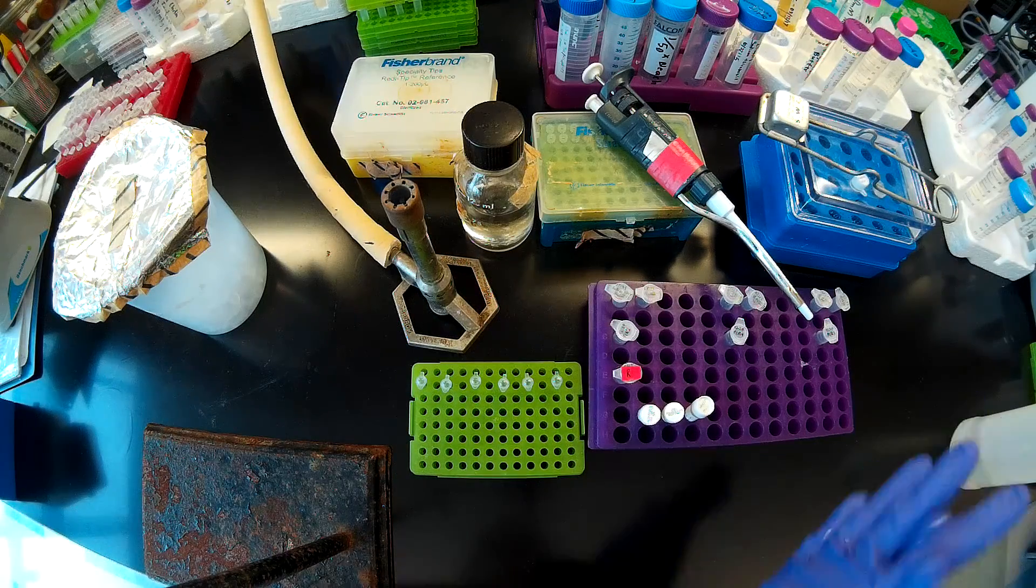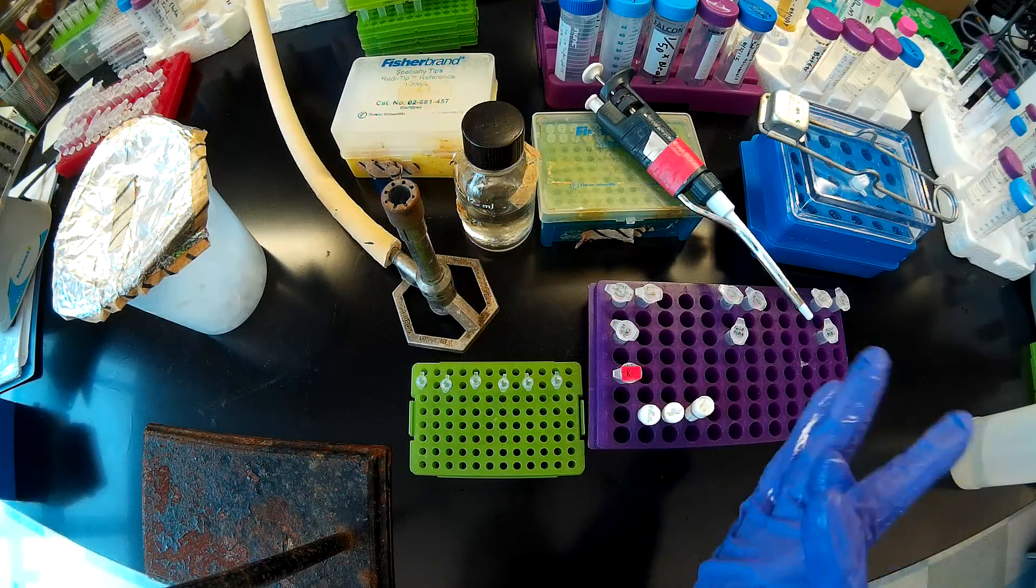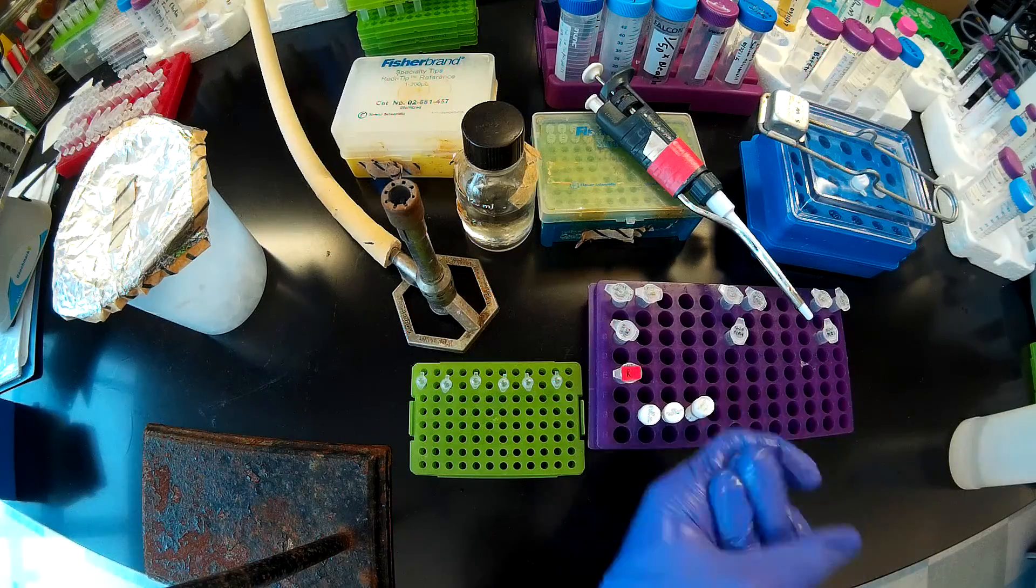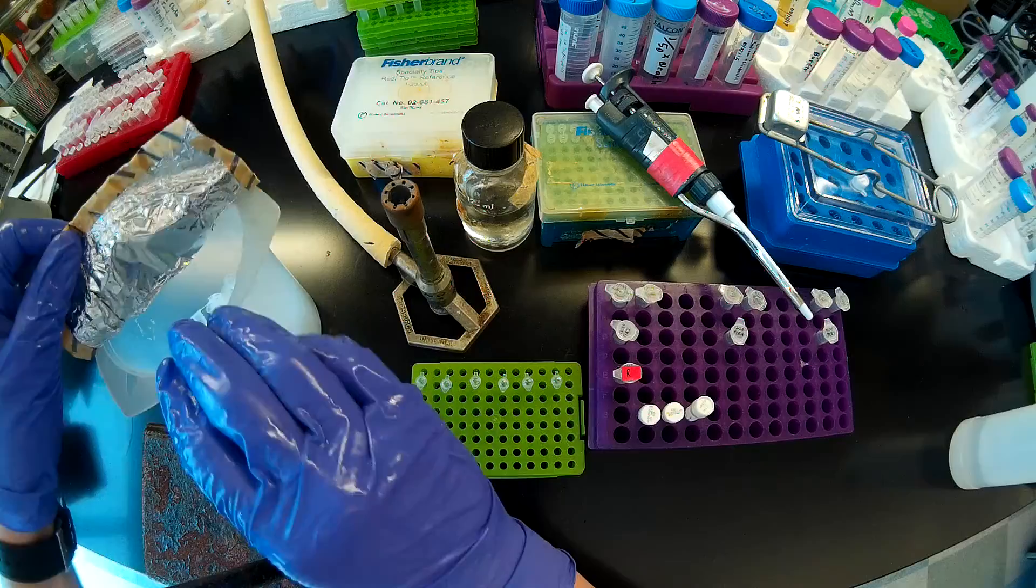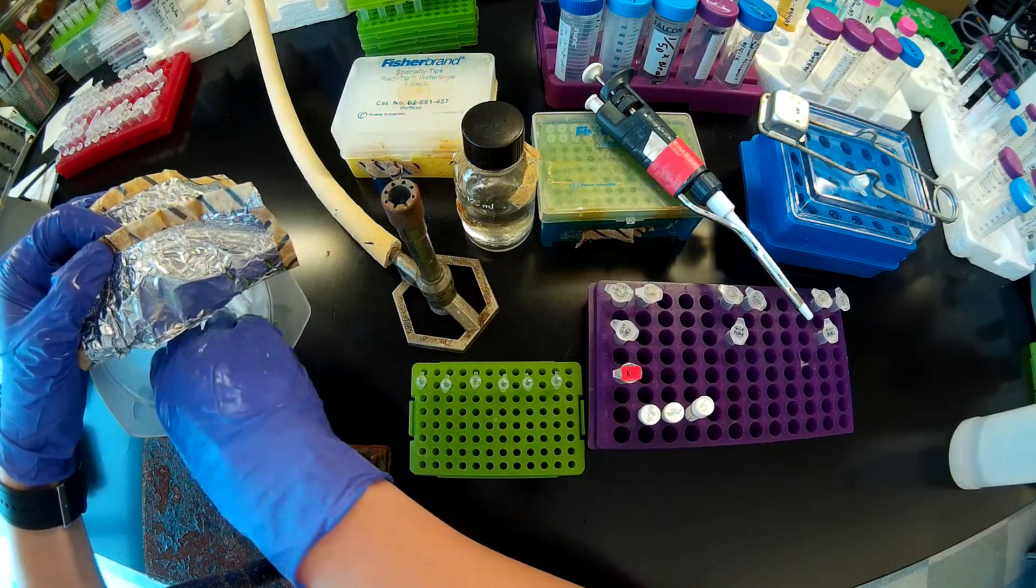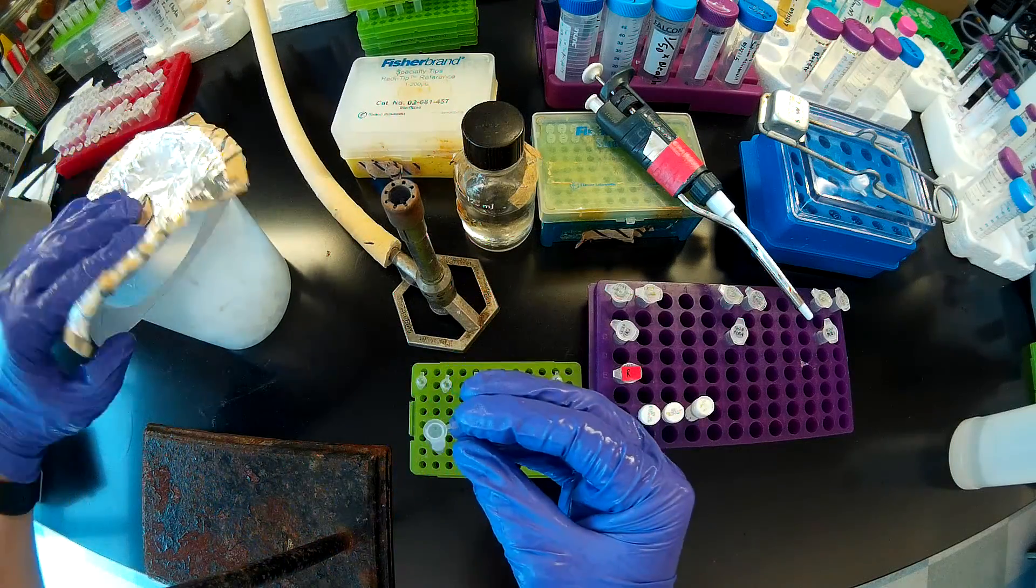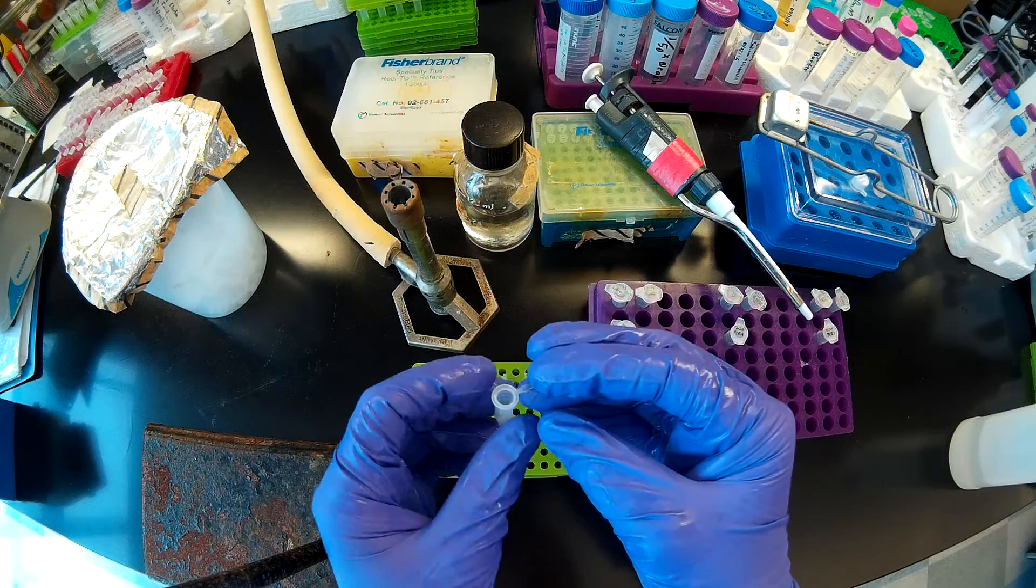First I'm going to grab a sterile 0.6 mil tube to set up my master mix, which is why I'm ethanol-ing my gloves off before I reach into this autoclave beaker here. I'll pull out one sterile tube to set up my master mix.